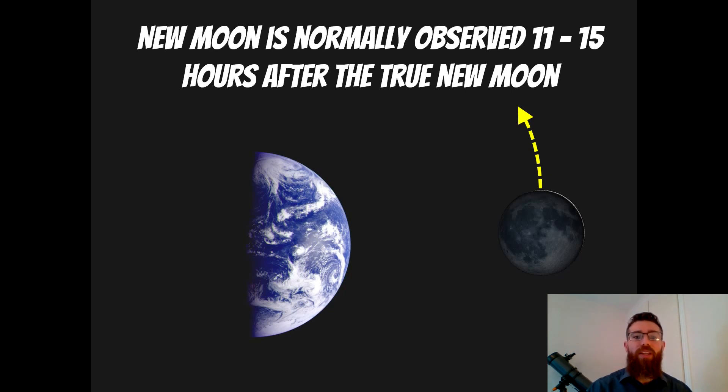But normally, for you to see a new moon from earth, you need to wait for that very first crescent to appear, which is normally about 11 to 15 hours after the true moon. So whenever people sight a new moon, it's actually a little bit later than the true astronomical new moon.